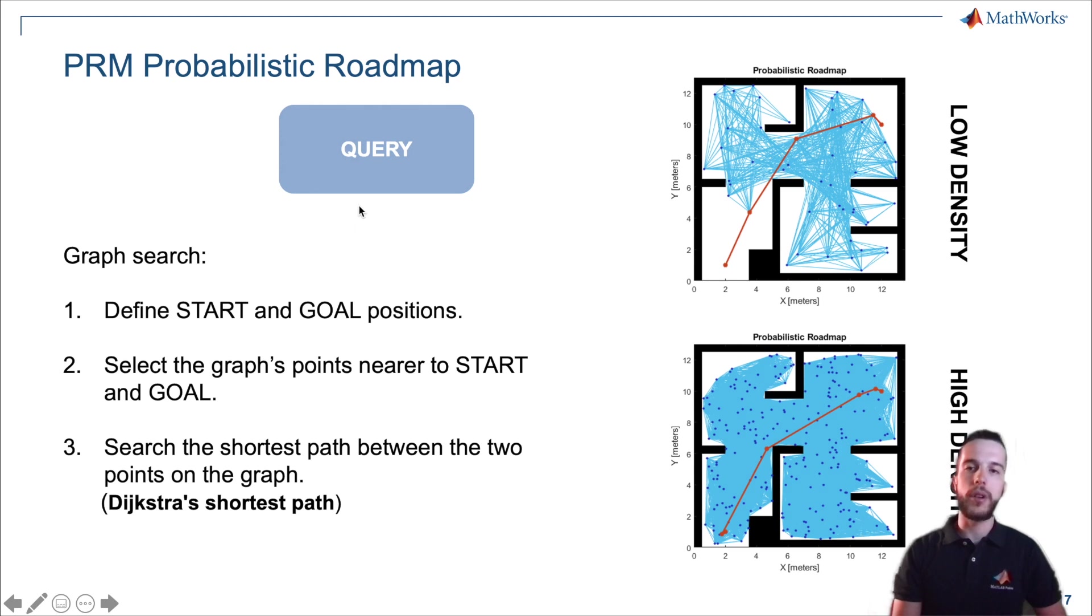The second step is the query phase. Now we have a graph, more dense or less dense depending on the case. We define the start position and the end position. We select the graph's points that are nearest to these positions, because it's not sure we have selected points already part of the graph. We're finding in the graph the points closest to the starting and end point. Final step: we have two points that are part of the graph. We search for the shortest path between two points using, for example, the Dijkstra shortest path algorithm. Once we've found the shortest path, this constitutes the path we need to follow to achieve our goal.